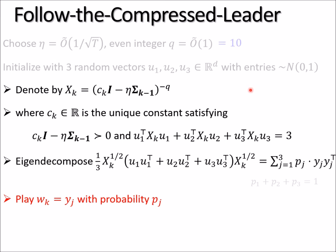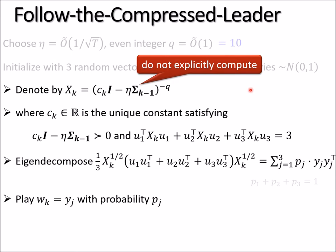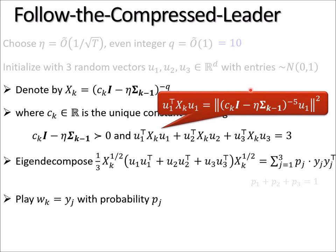So two questions remain. First, why can we have a fast implementation? And two, why does it have low regret? Let me try to answer the first question first. We denote by X_k this matrix inversion, but we never explicitly compute it. Computing it requires matrix inversion, which is like n^ω. But instead, whenever we want to use it, for instance here, we want to compute the quadratic form u^T X_k u. You can quickly realize that it's nothing but the Euclidean norm square of the following vector. And this vector is to apply the matrix inversion q/2 times, which is five times in this case, on top of this vector.